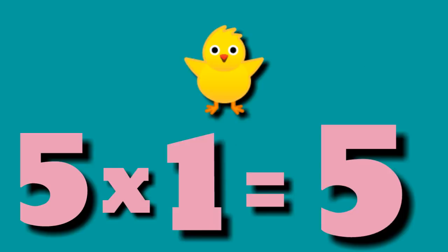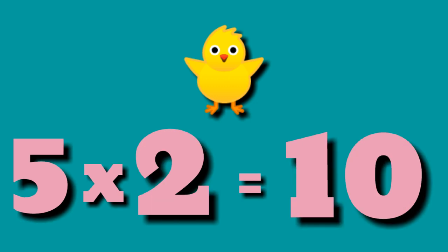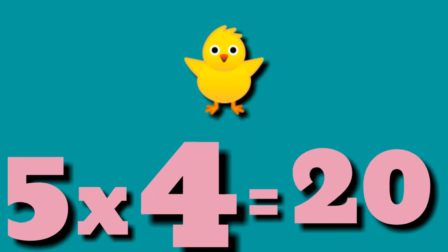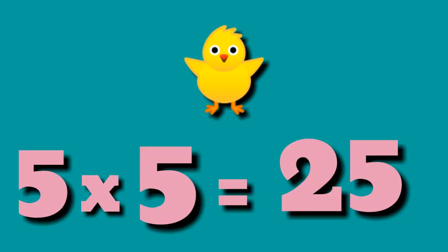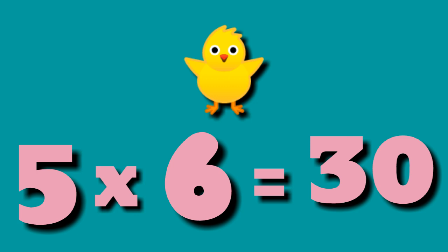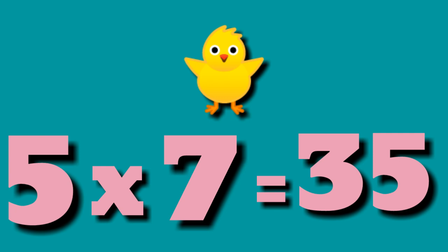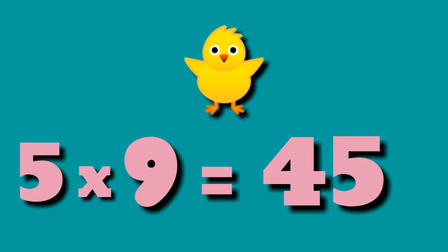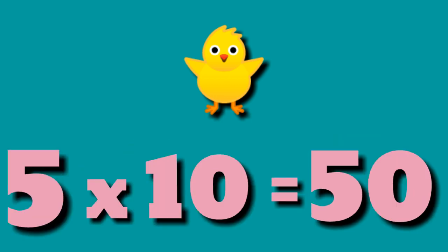Table of 5. 5 ones are 5, 5 twos are 10, 5 threes are 15, 5 fours are 20, 5 fives are 25, 5 sixes are 30, 5 sevens are 35, 5 eights are 40, 5 nines are 45, 5 tens are 50.